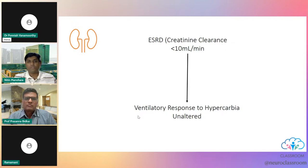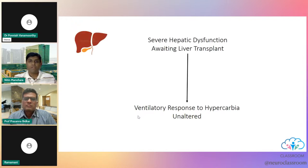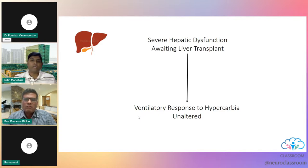Remifentanil can be used in end-stage renal disease — even a kidney failure patient can metabolize it very well. Similarly, in severe hepatic dysfunction or patients awaiting liver transplant, you can use remifentanil because metabolism is not dependent on the liver; it depends on tissue and plasma esterases. There is also no change in intraocular pressure with remifentanil use, so it can be used in raised IOP cases.